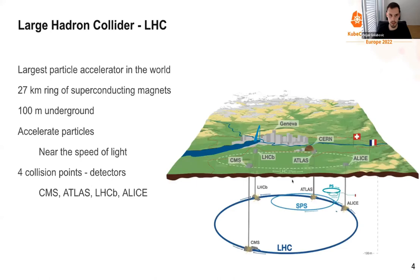CERN operates the Large Hadron Collider, the largest particle accelerator in the world. It is a 27-kilometer ring of superconducting magnets located 100 meters underground on the Swiss-French border. Beams of particles from opposite directions are accelerated near the speed of light and collide at four detectors, where new subatomic particles appear that cannot be observed otherwise. This is how the presence of the Higgs boson was confirmed in 2012.